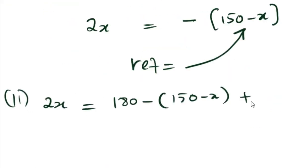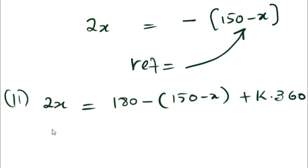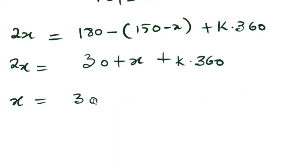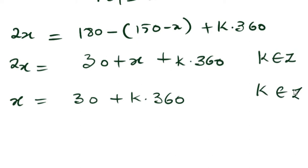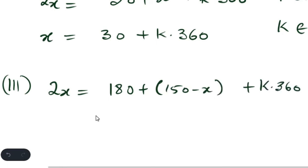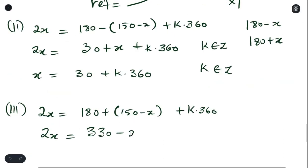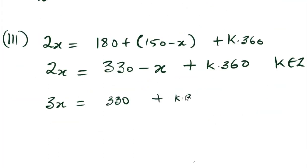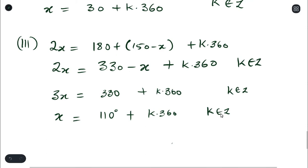For cos, we always end with k360. Simplifying the first answer from the second quadrant gives x = 30 + k360. The second answer comes from the third quadrant equation. Keep k is an element of integers for every step. With both answers found, half of the work — the general solution — is done.